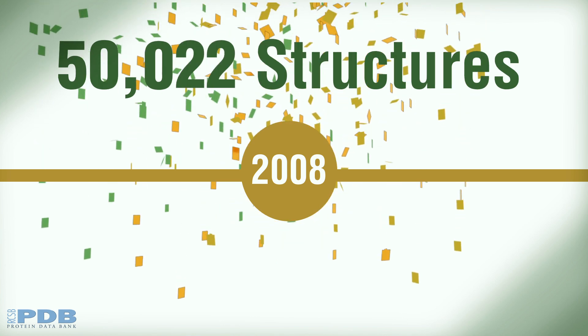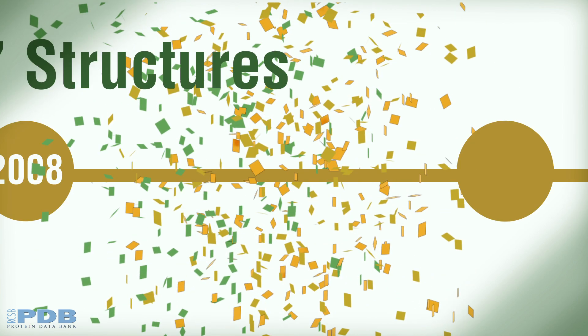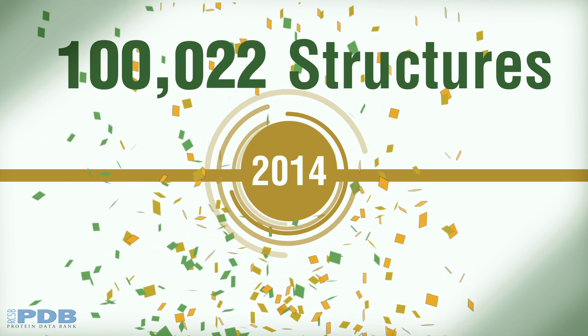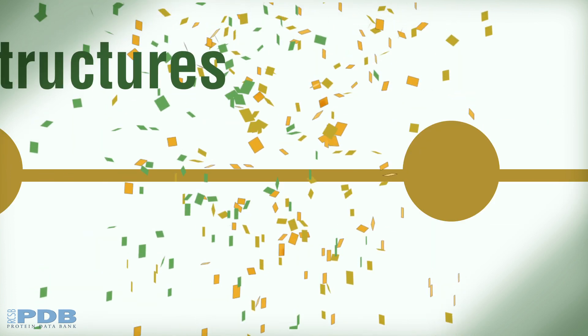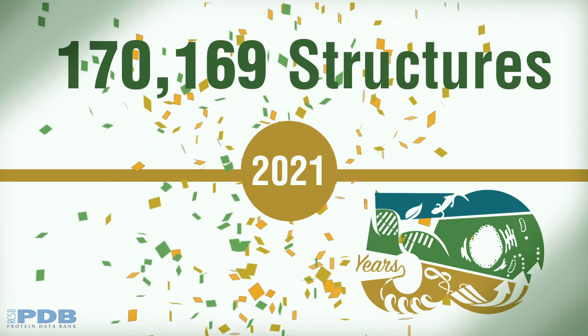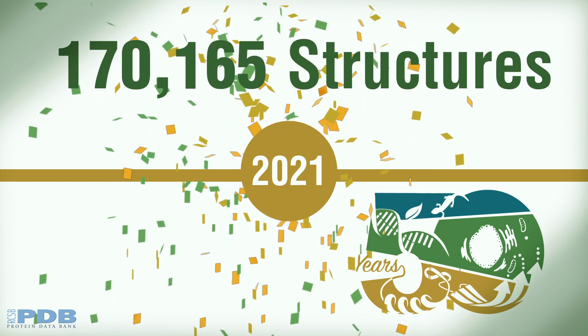In 2008, the PDB archive reached another milestone number of entries, 50,000 structures. In 2014, the number doubled. As the PDB entered its golden year, there were more than 170,000 structures in the archive.